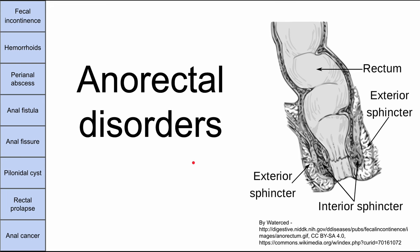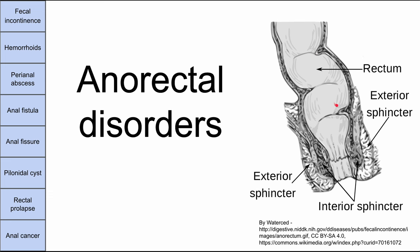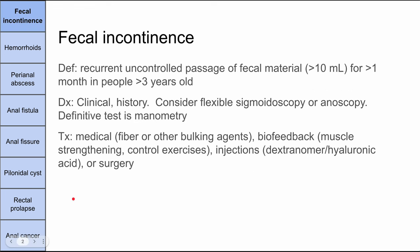This is a short overview of anorectal disorders. We're going to be talking about fecal incontinence, hemorrhoids, perianal abscess, anal fistula, anal fissures, pilonidal cysts, rectal prolapse, and anal cancer. Here's a quick picture of the anus and the rectum — this is the most distal part of the GI tract and the anatomic location of all these disorders.